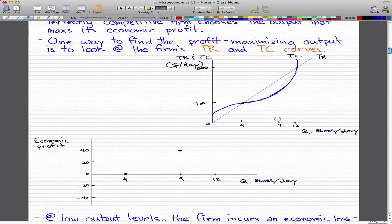Similarly, at point nine, or at nine shoes per day, we can see that the total revenue is above the total cost curve. So this is the difference and that is the amount of our economic profit.